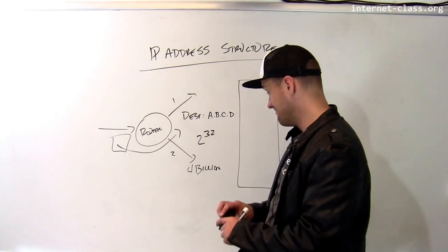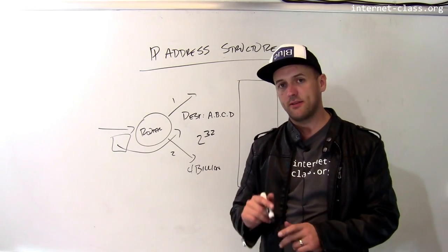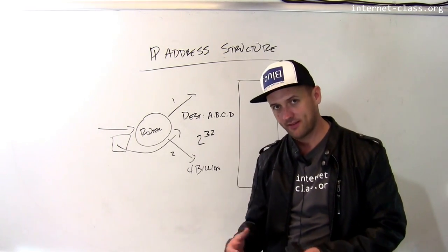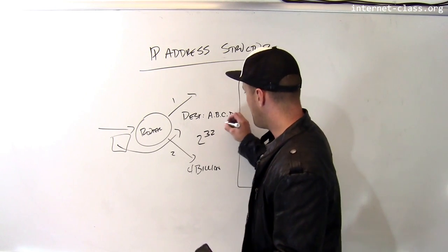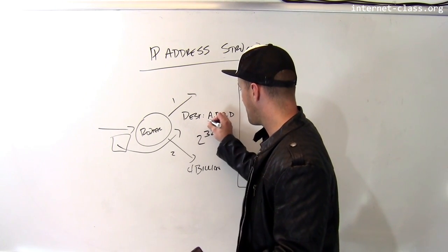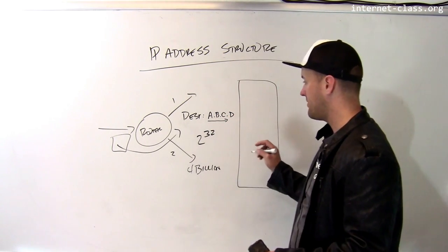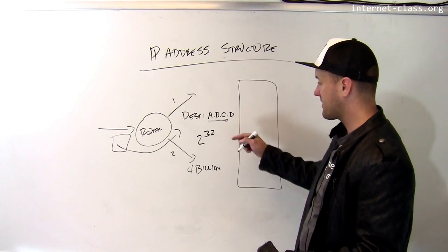So instead, what I'm going to do is I'm going to try to make routing decisions based on a prefix. So let me explain how that works. The prefix is some beginning part of this IP address. Let's go through a simple example.